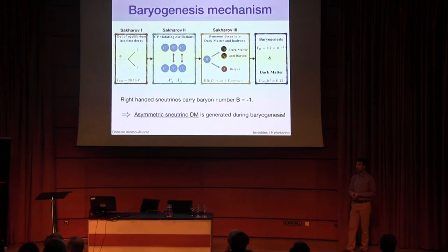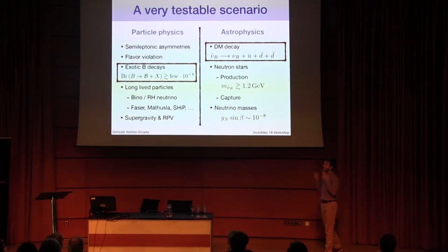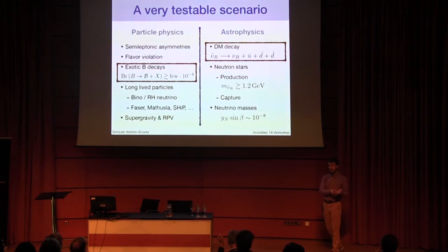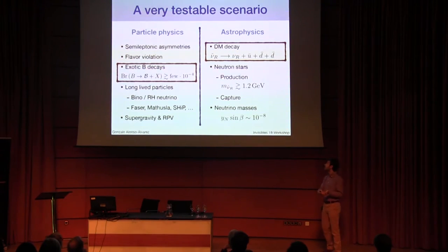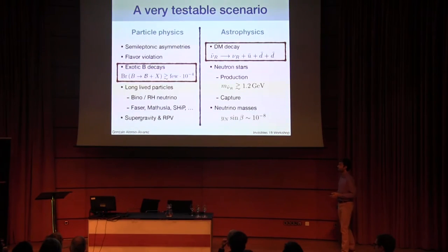You might be wondering: how on earth is this not ruled out? Well, it is not — but what's interesting is that it will most likely be ruled out or confirmed in the next few years. This is a very testable scenario, and I think that's what's appealing. There is a lot of phenomenology, both in particle physics and astrophysics. For instance, we need a relatively large branching ratio of B mesons into baryons plus missing energy, and dark matter is not completely stable but can have a particular decay into anti-quarks and right-handed neutrinos.